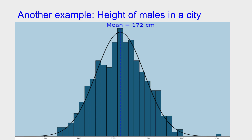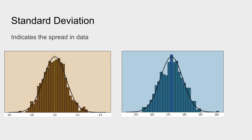What I note in both examples is that although most readings stick close to the mean, there is some spread in data. In the cookie example, we have a mean of 5 cm, but we observe cookies with diameters of 4.7, 4.8, 5.1, or 5.2 cm. Similarly, for height of males, most readings concentrate around 172 cm, but readings like 156 or 160 cm are not uncommon, and some readings as far as 190 cm are also observed. To capture this spread, we have another parameter called the standard deviation.